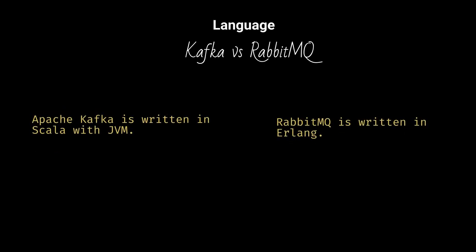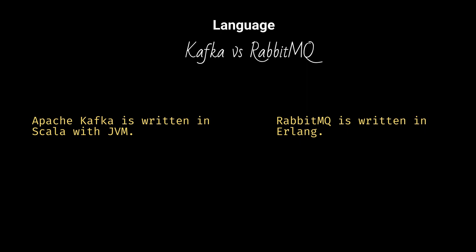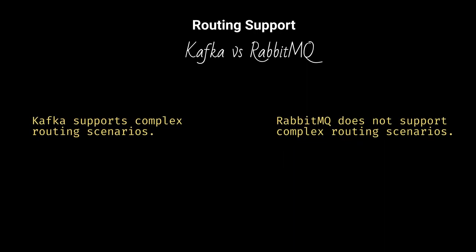Apache Kafka is written in Scala with JVM. RabbitMQ is written in Erlang. Kafka supports complex routing scenarios, whereas RabbitMQ does not support complex routing scenarios.